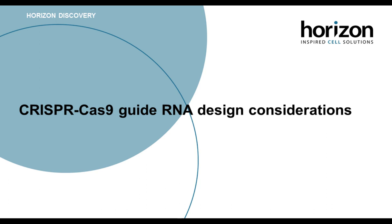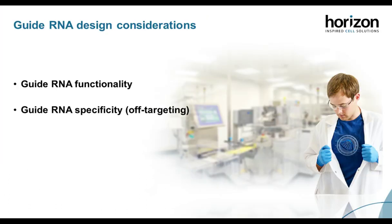Before we get into the details of CRISPR applications, I want to discuss considerations for guide RNA design and the impact they can have on all CRISPR-Cas9 experiments. The two aspects to consider are functionality—how efficient the guide is at creating a double-stranded break—and specificity—the guide's potential for causing a break in unintended regions of the genome. I will walk you through our development of an algorithm for functionality, and then show data from experiments looking at guide RNA specificity to minimize off-targeting.